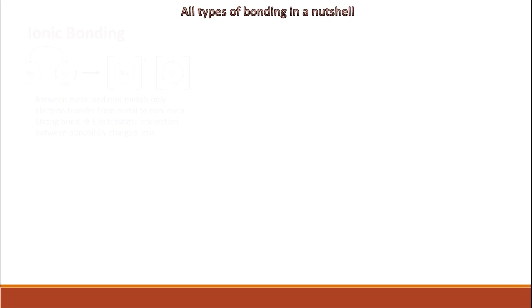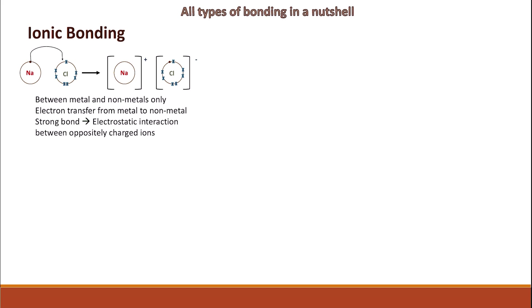So let's have a look at all types of bonding in a nutshell. Ionic bonding is the bond we can see between metals and non-metals, where metals lose electrons to form positively charged ions, and non-metals gain the electrons to form negatively charged ions. This kind of bond is very strong because of the strong electrostatic interaction between oppositely charged ions.